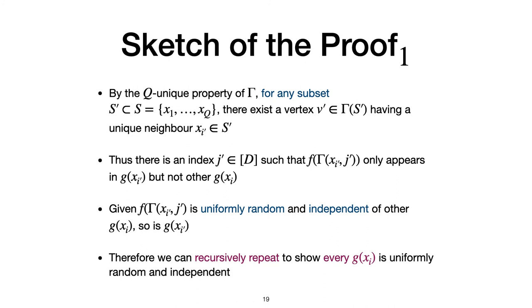So, why does it work? As a QUnique property on this expander, for any subset, there exists a vertex v' having a unique neighbor xi'. Thus, there is an index j' such that this term, f of gamma of xi' j' only appears once, only appears in the g xi' but no other g xi. Given this term is uniformly random and independent of other g xi, the g xi' is also uniformly random and independent of other g xi terms. Therefore, we can recursively repeat to show every g xi is uniformly random and independent.